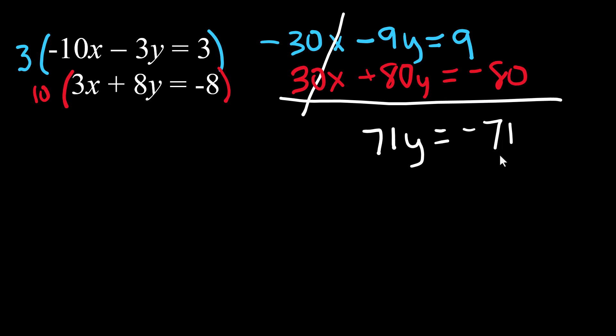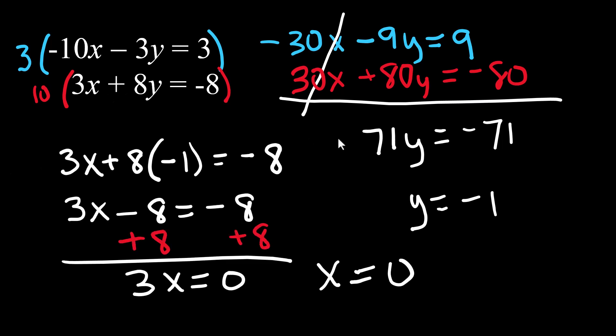That means y equals negative 1. I have to substitute this back into something to actually figure out what the x is. I like this equation 3x plus 8y equals negative 8. So I'm going to pop it in there. We have y and x and so we are finished with that problem.